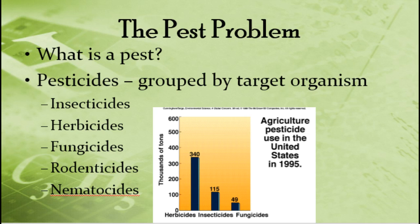So you can probably guess from the root of the word that pesticides are meant to deal with different pests. A pest can be any organism that interferes in some way with human welfare or human activities. Make sure you're getting these definitions into your notes. Pests could be things like weeds, insects, rodents, bacteria, fungi, or nematodes, which is a type of worm.